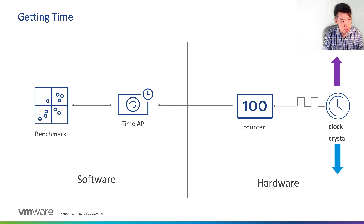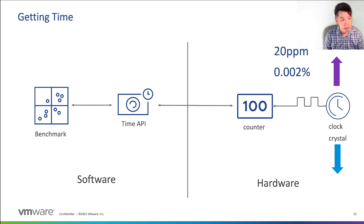The clock crystal ticks based on the laws of physics, and the frequency it ticks at is affected by things such as temperature. However, the error we get in the clock over normal temperature ranges is quoted on crystal data sheets, and it's something like 20 ppm, or 0.002%, which isn't enough to cause serious issues with benchmarks.